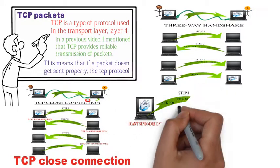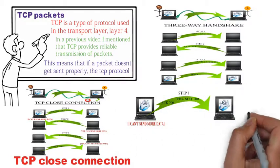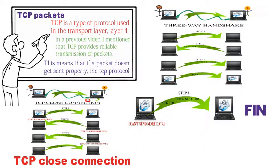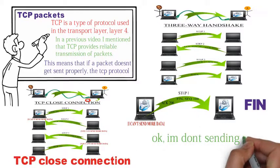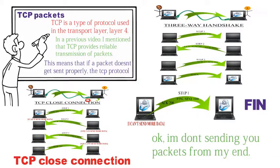In step one of the TCP closed connection, I will send you a FIN packet with a sequence number along with an ACK packet that indicates your next sequence number. The FIN packet is the opposite of the SYN packet — it tells the other device, "I'm done sending you packets from my end."